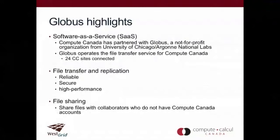Globus is software as a service — it's not installed by Compute Canada, but rather we've partnered with Globus, a not-for-profit organization based out of the University of Chicago, partnered with Argonne National Labs. Globus runs the back-end infrastructure enabling high-speed, reliable file transfer, and Compute Canada, including Westgrid, configure their systems to take advantage of the service. Nearly 25 Compute Canada sites are connected within our Globus portal. It offers file transfer and replication that is more reliable, convenient, secure, and high-performance — critical when dealing with data at the terabyte and petabyte scale.